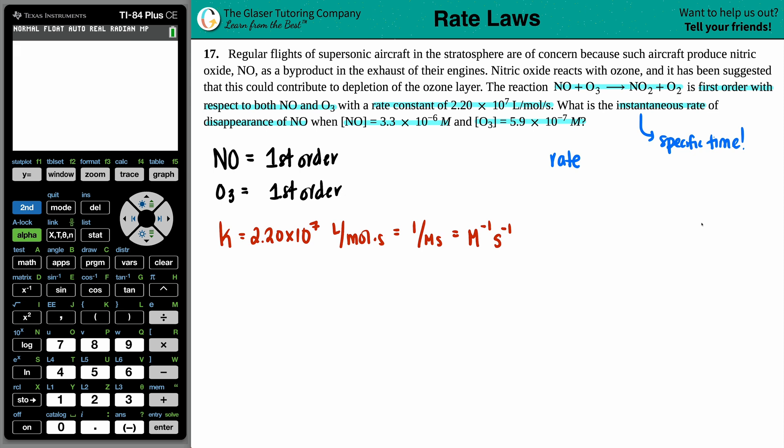Anytime you're searching for an instantaneous rate, it is a rate at a specific time. But they didn't tell us the time here. I don't know if it's two seconds, three seconds, zero seconds, but it doesn't really necessarily matter. They gave us the concentrations. There must be some type of formula. And you are exactly correct. Especially if they're talking about orders, rate constants, and they give you molarities, we're looking for the general rate law.